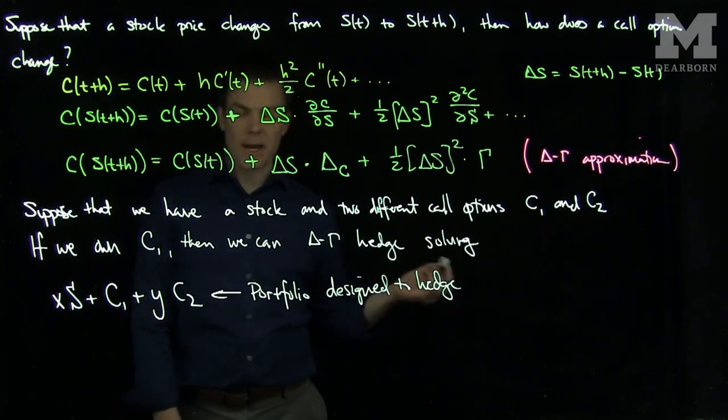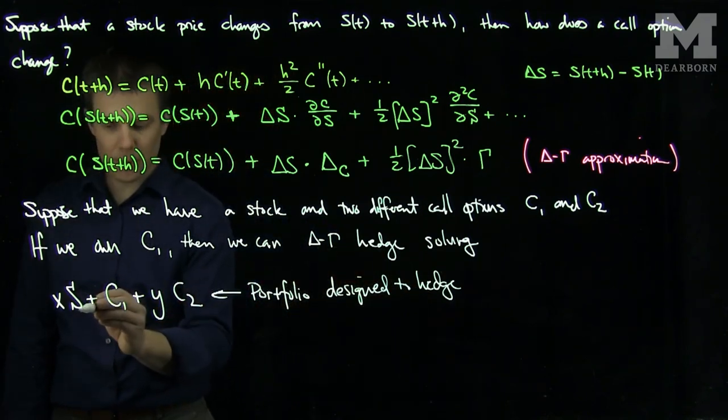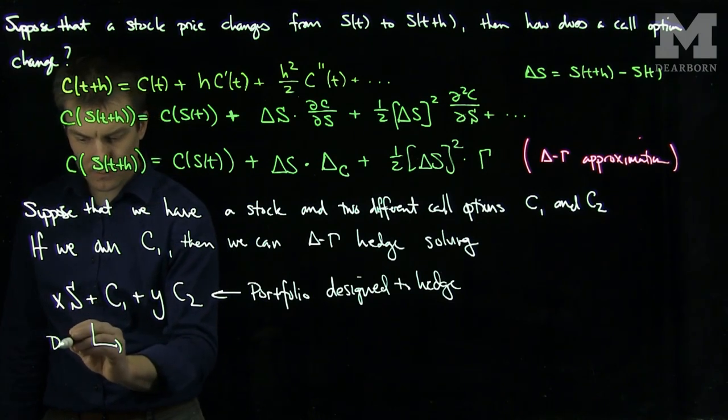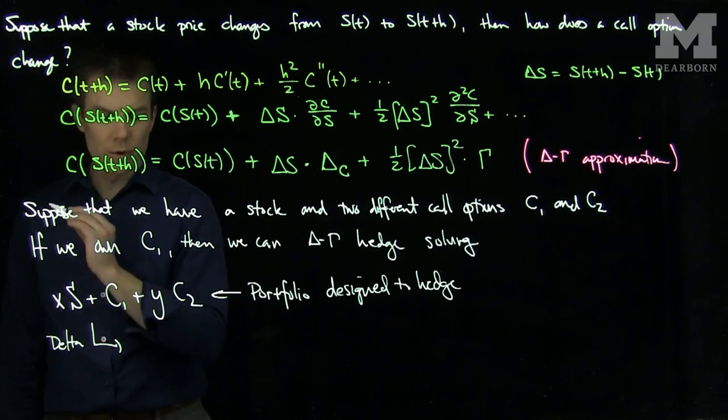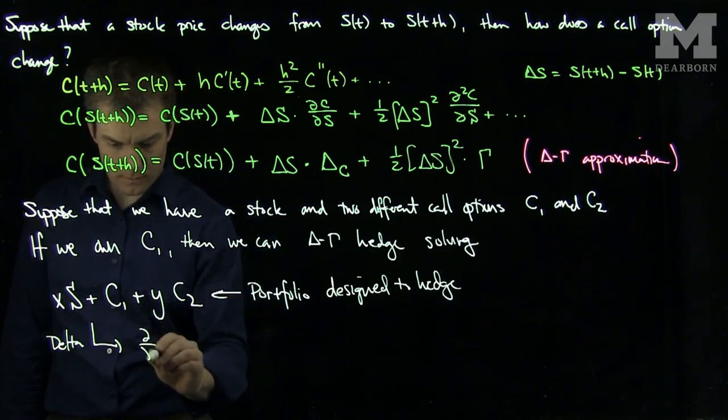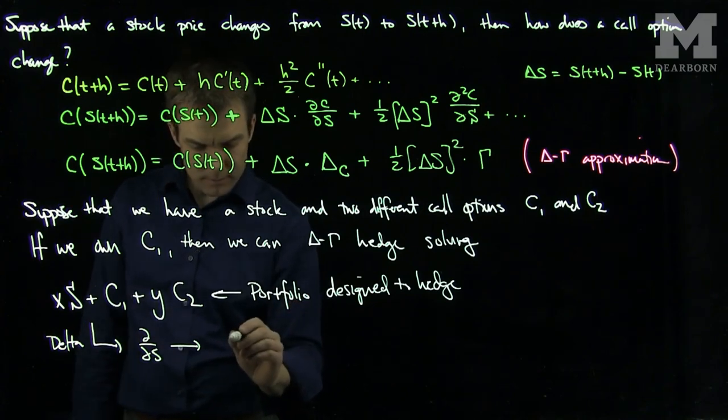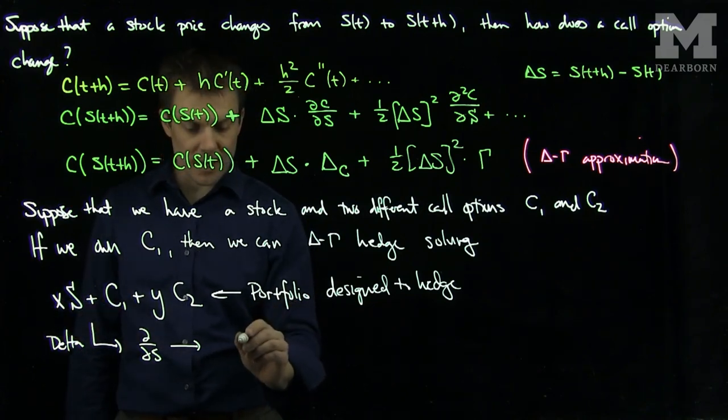To delta-gamma hedge, we'll compute the delta of this portfolio by taking the derivative with respect to S. For x shares of the stock, the derivative is just x,